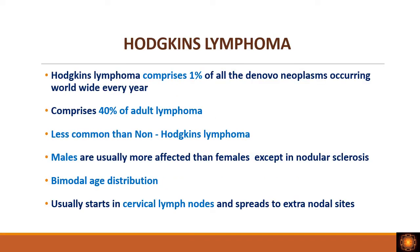When we look at lymphomas, we have non-Hodgkin's lymphoma and Hodgkin's lymphoma. Non-Hodgkin's lymphoma is more common. Hodgkin's lymphoma comprises about one percent of all de novo neoplasms and 40 percent of adult lymphomas. Males are more commonly affected, and there is a bimodal age distribution — younger and elderly age groups. It usually presents as peripheral lymphadenopathy, most commonly as enlargement of the cervical lymph nodes, then spreads to extra-nodal sites.